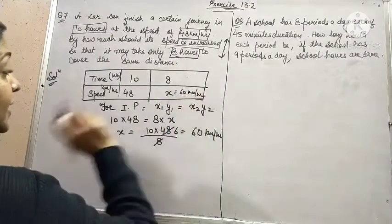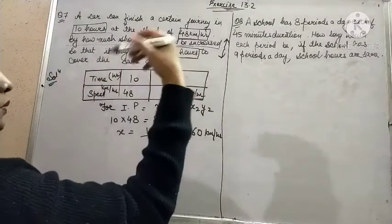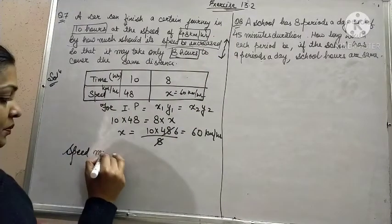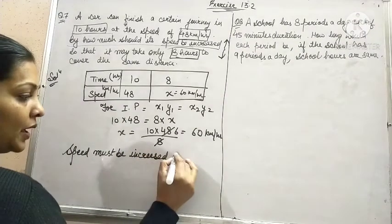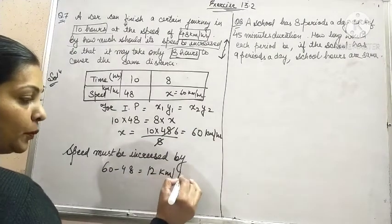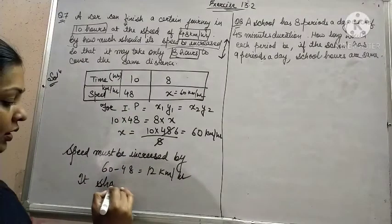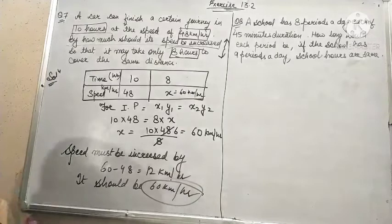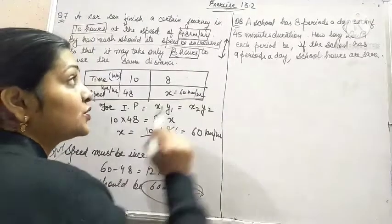But see what is given: by how much should its speed be increased? So speed must be increased by 60 minus 48, that is 12 km per hour. And it should be 60 km per hour. So this is the required speed. And this is our answer. Let's move to the last question of the exercise.